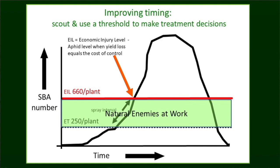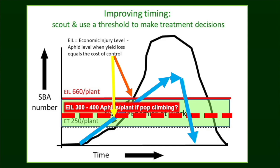You have to get in the field. Before, the economic injury level — where the cost of treatment is about equal to the yield gains — was around 600 to 700 aphids per plant, because populations were climbing quickly. Now they seem to climb a lot more slowly. They can stay at 300 to 500 aphids per plant for a couple of weeks before they shoot up, but they're still causing damage. So we have to get a handle on what that damage is at that medium level of aphids.